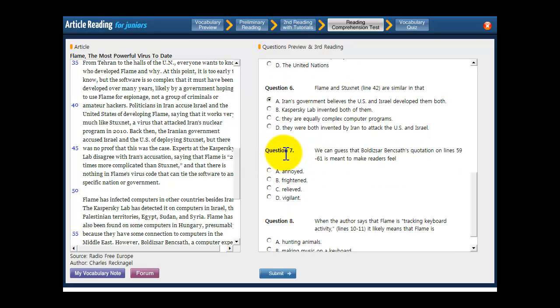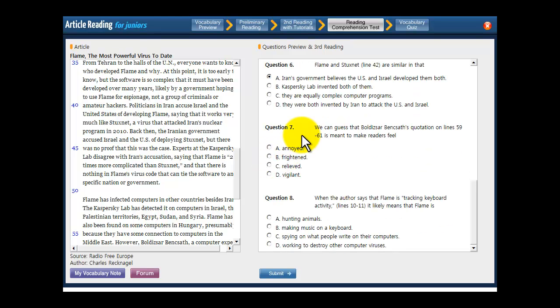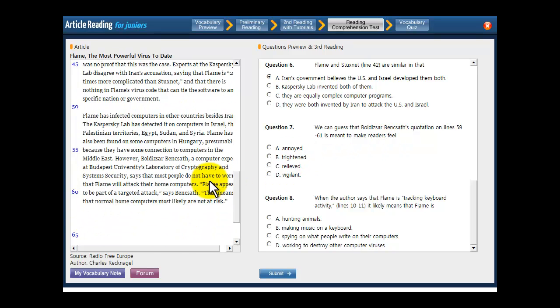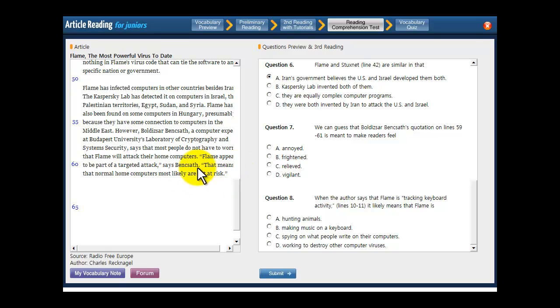Let's move on. We're going to look at number seven last. We can guess that Bolduskar-Bensgath's quotation on lines 59 through 61 is meant to make readers feel what? So, how are you supposed to feel when you read this person's quotation on these last couple of lines?